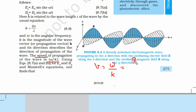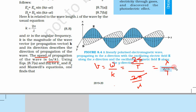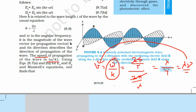Let us put the value: ω is 2π/T, where T is the time period, and k is 2π/λ. So the 2π terms cancel out and we get λ/T. And 1/T is nothing but ν (frequency). So λν is the velocity of the wave, which we have written in the form ω/k.